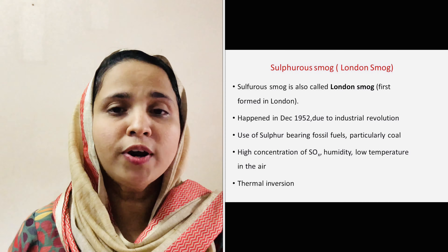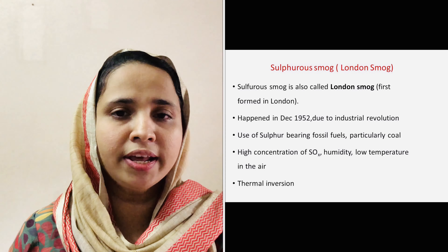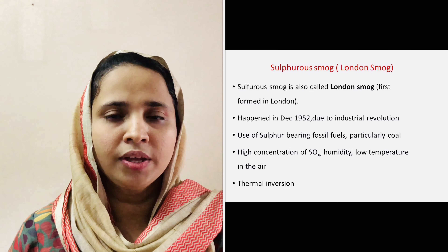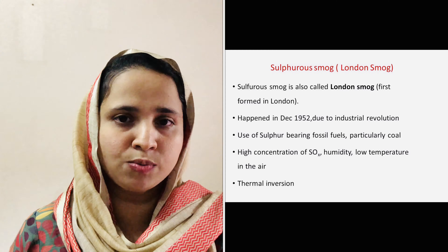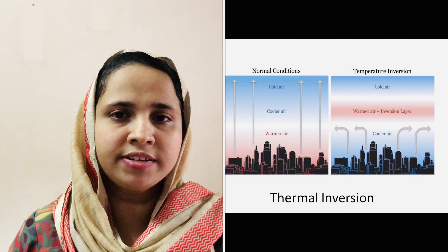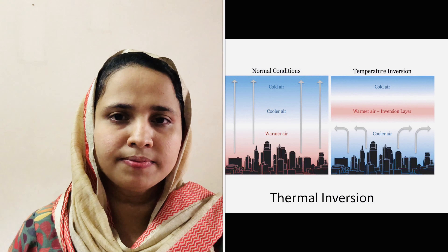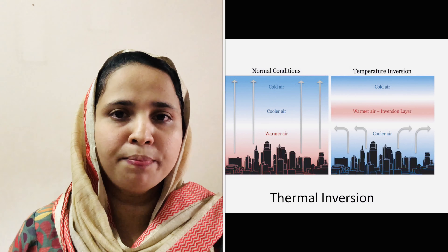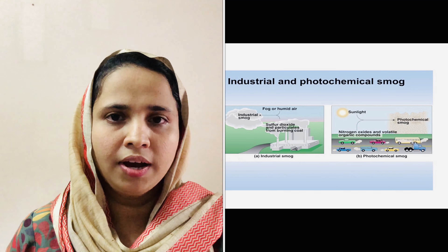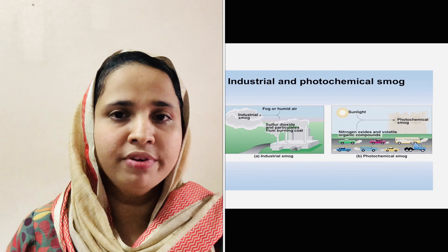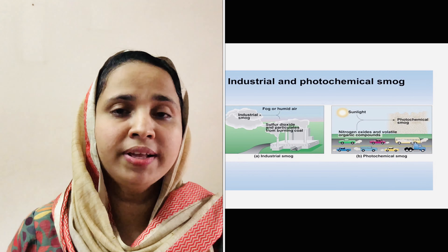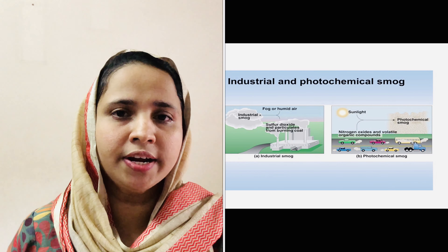By controlling the use of sulphur-containing fossil fuels, we can control sulphurous smog. Smog catches at factories and power plants can help in reducing sulphurous smog. At higher altitudes, winds carry away the pollutants and prevent them from concentrating into smog.